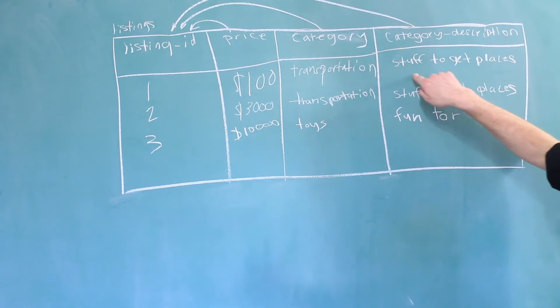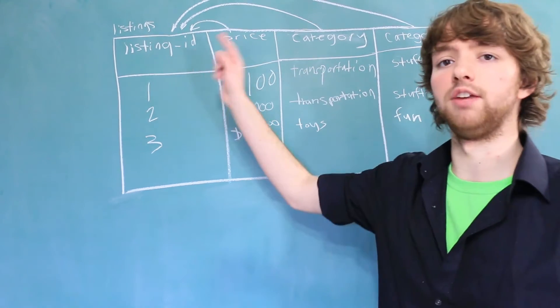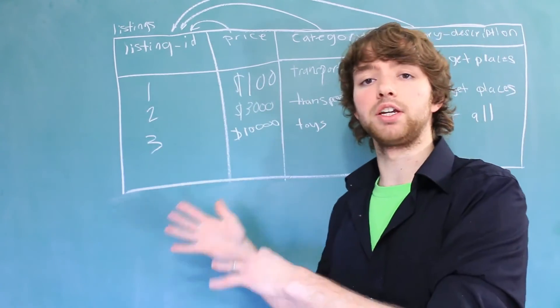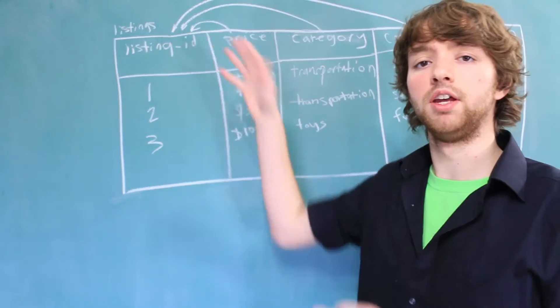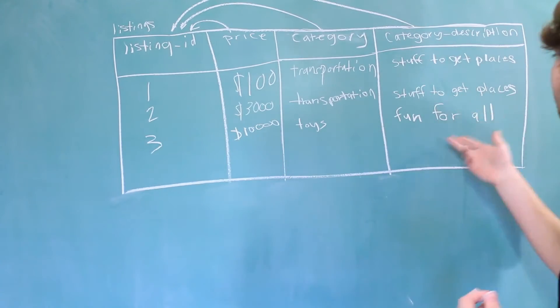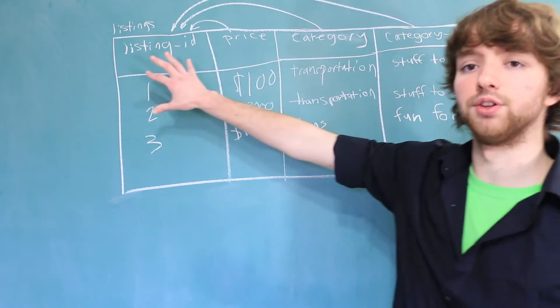Now let's look at this value in relation to the primary key. If we change the primary key from 1 to 3, so we stop talking about the entity with the ID of 1 and we start talking about the entity with the ID of 3, you can see that the category description does change. So it does depend on the listing ID.